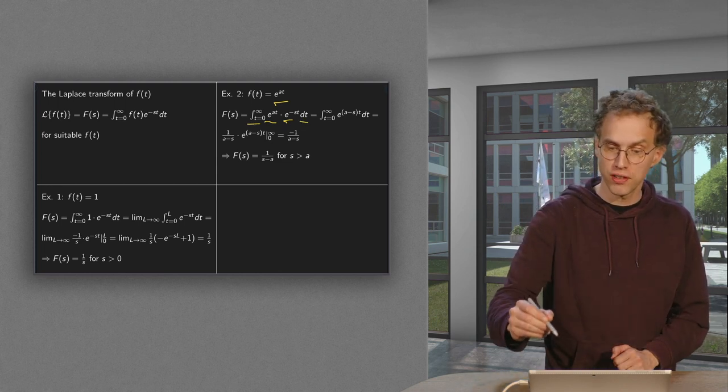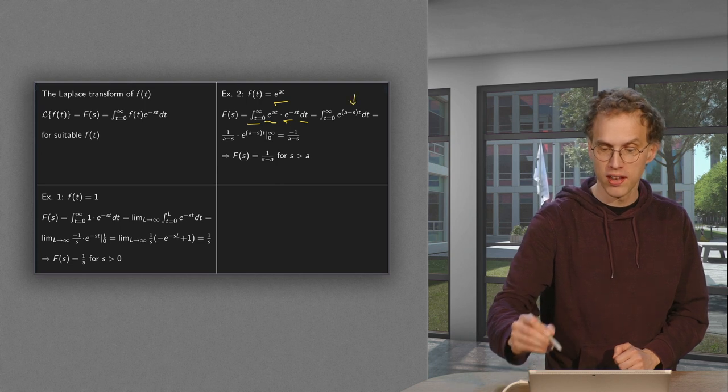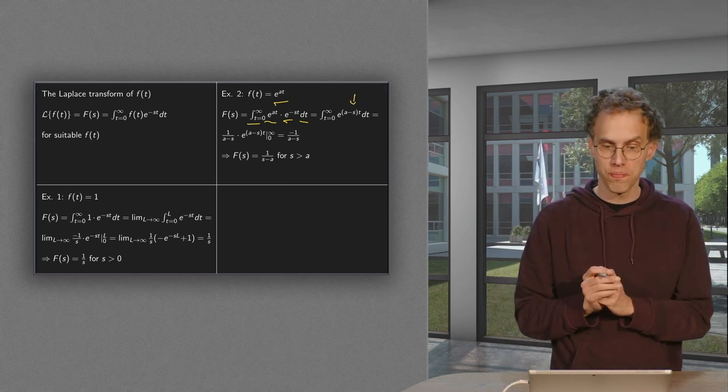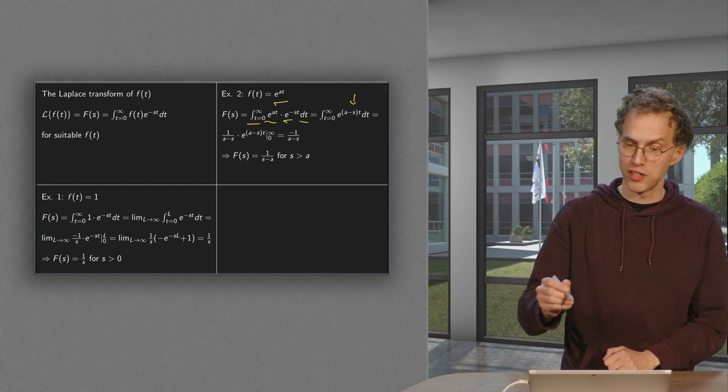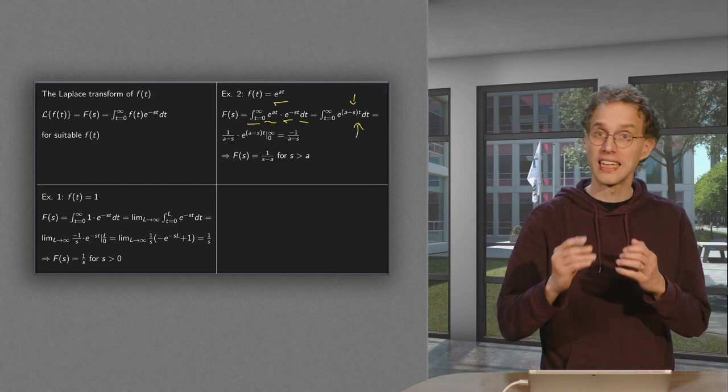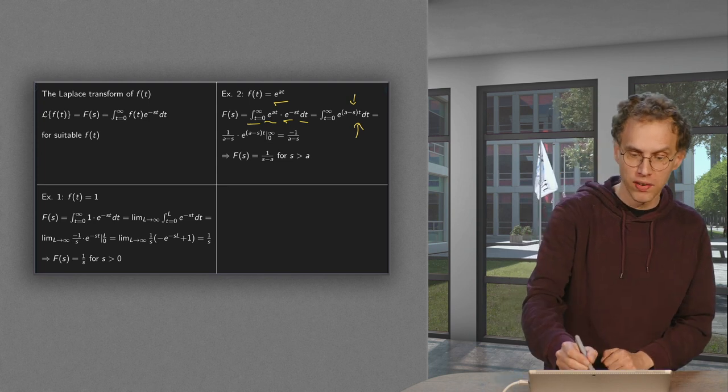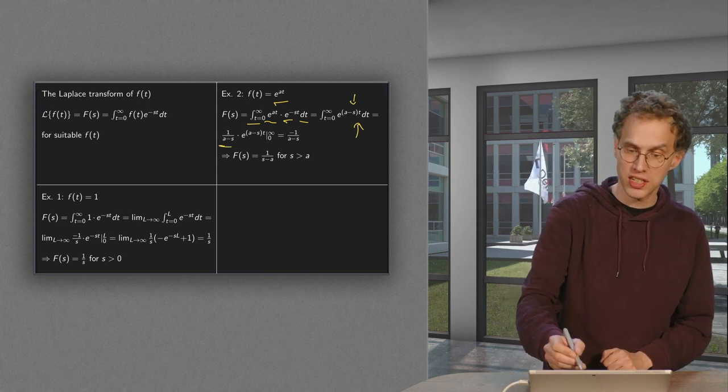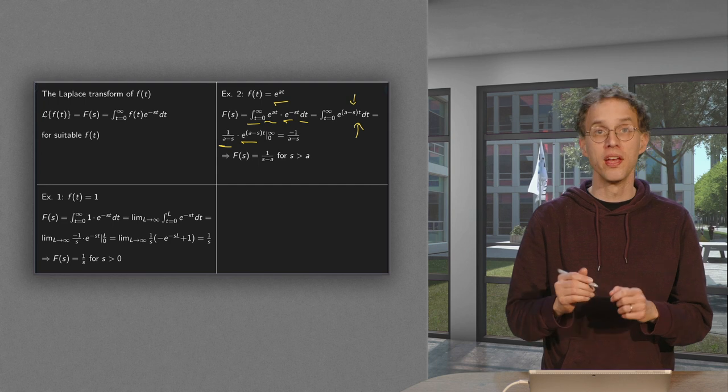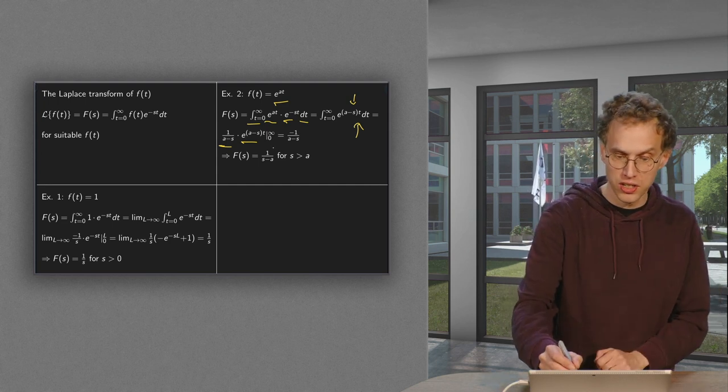So first we rewrite the function a bit as e to the power (a minus s) times t. Then we have to integrate with respect to t. So we have the antiderivative of e to the power (a minus s) times t, which gives us 1 over (a minus s) times the exponential.